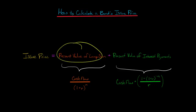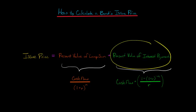You've got the present value of the lump sum payment that's paid out when the bond matures, and then you have the present value of the interest payments that are made along the way.